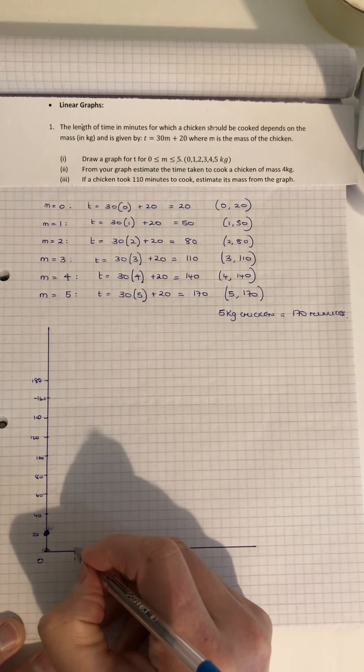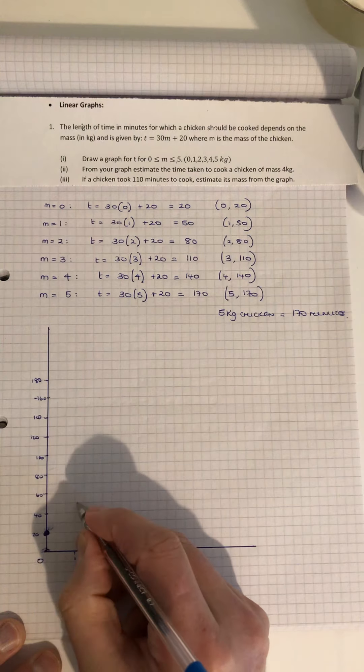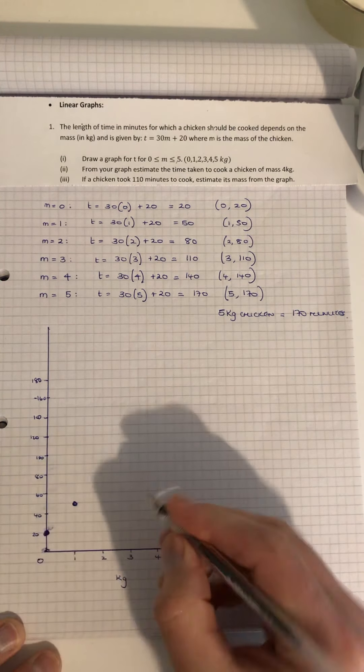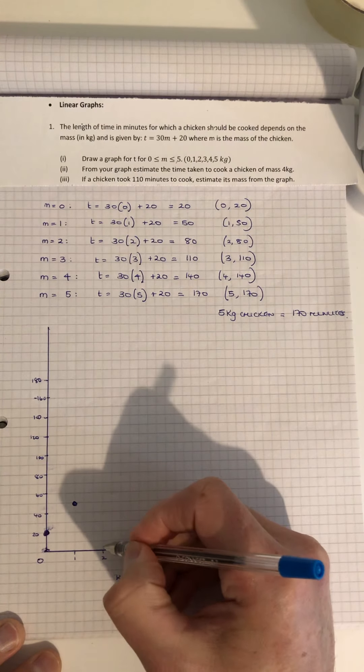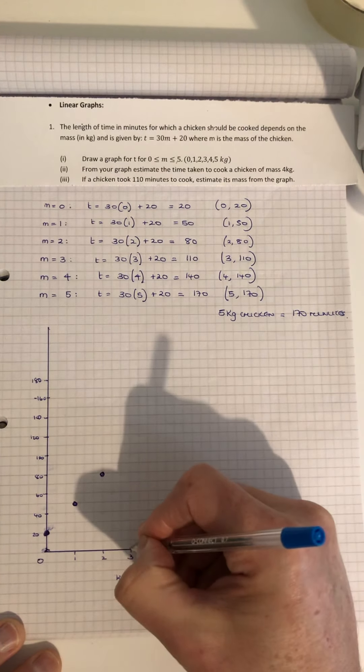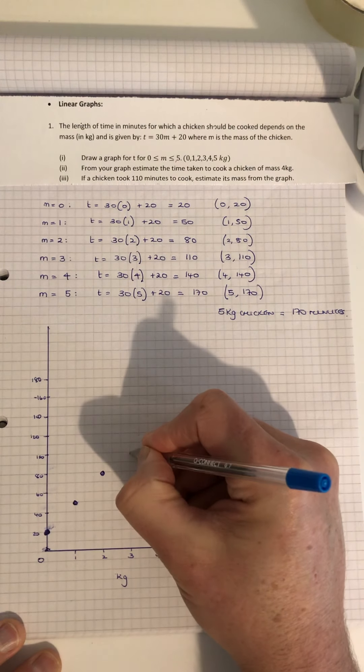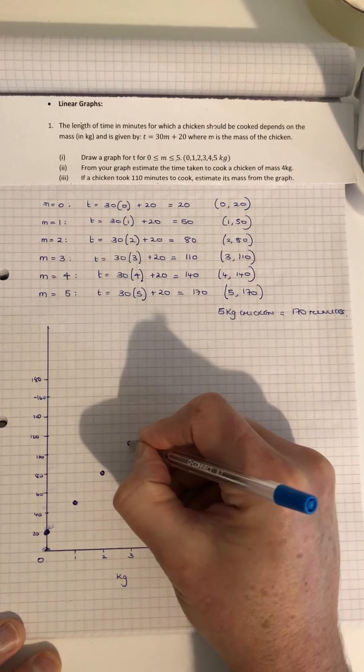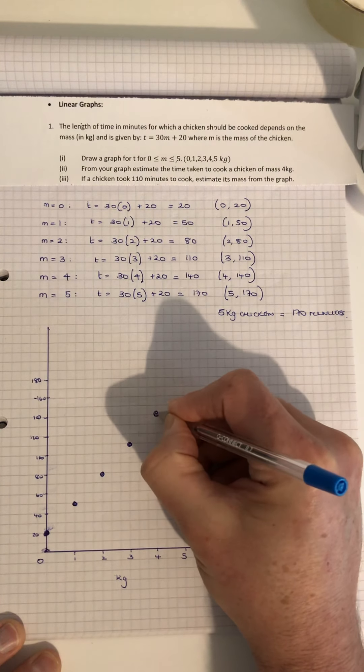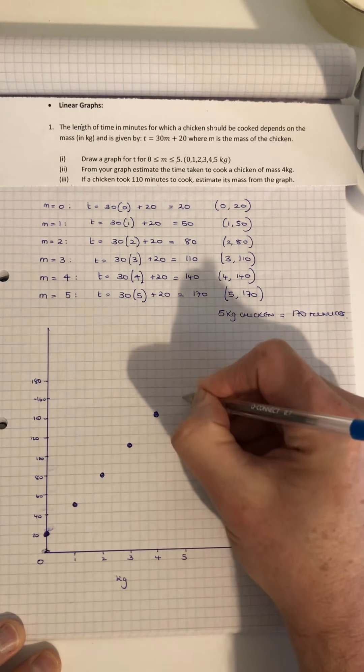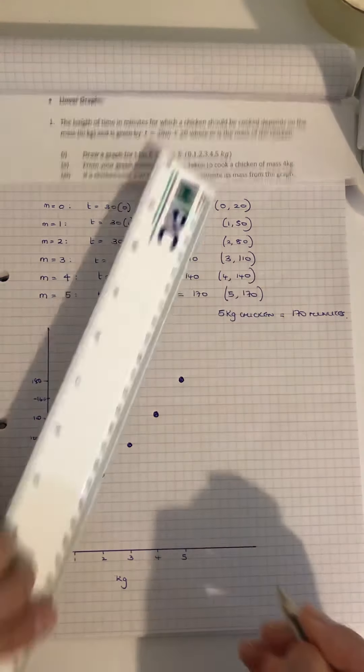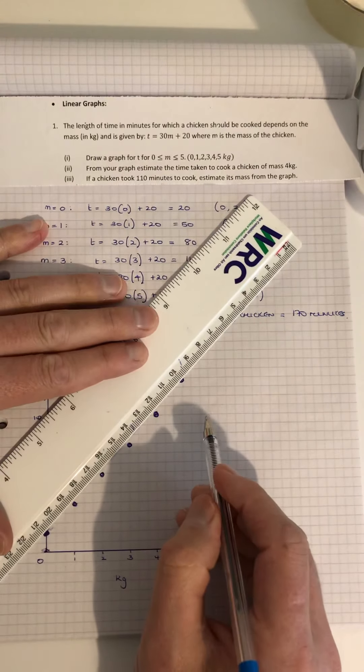2 kg, 80 minutes. 3 kg, 110. 4 kg, 140. 5 kg, 170. So our graph looks like a line, like so.